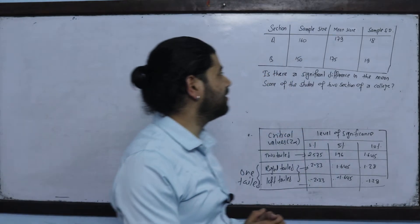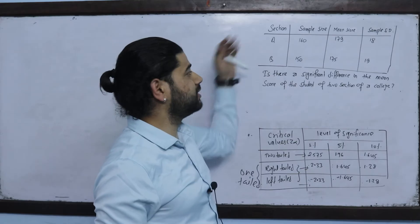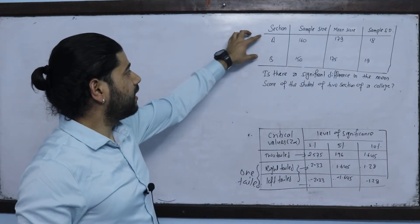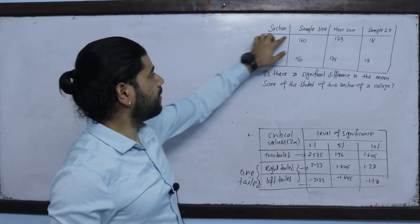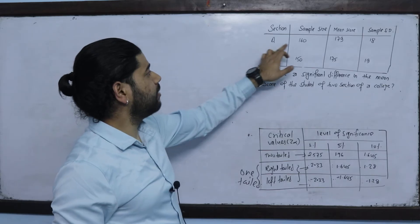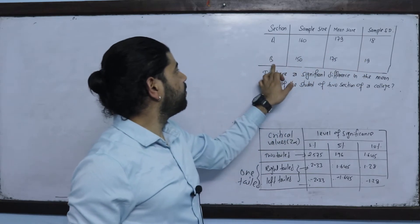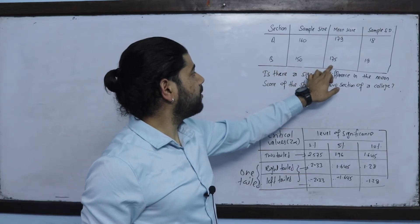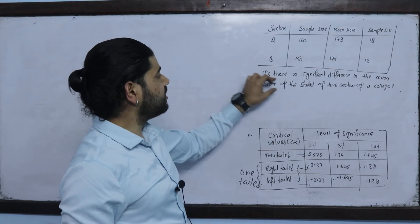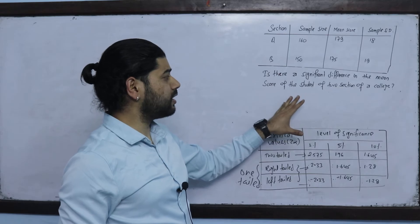I will solve a hypothesis problem related to a z-test. Here is the question: Section A has a sample size of 160 with a mean score of 179 and standard deviation of 18. Section B has a sample size of 150 with a mean score of 175 and standard deviation of 19. Is there a significant difference in the mean score of students of two sections of a college?